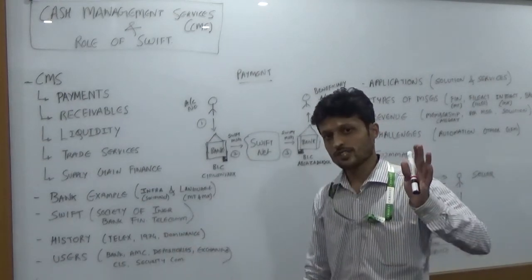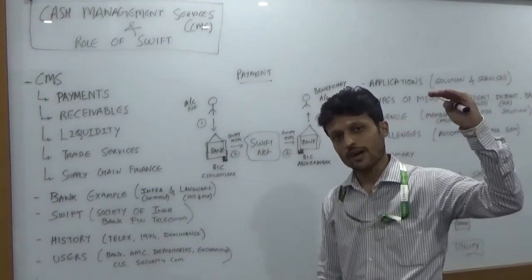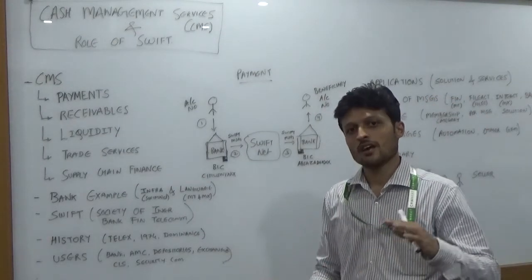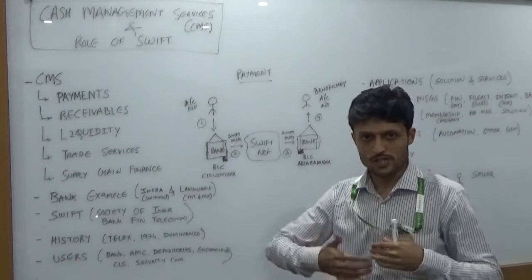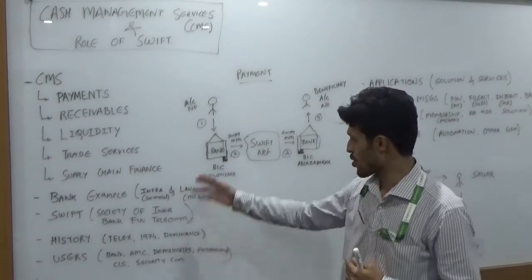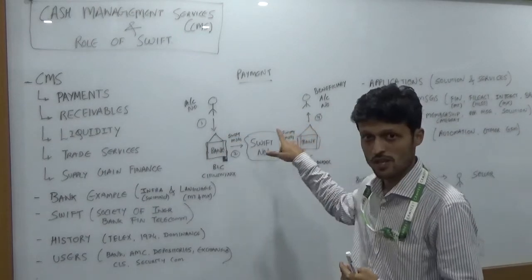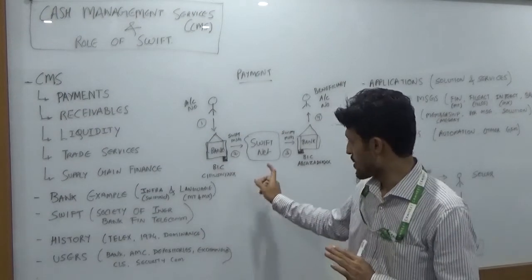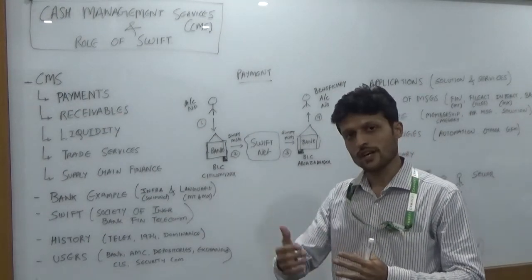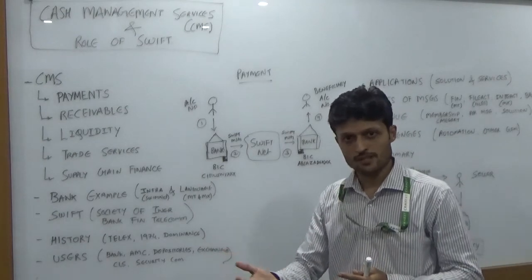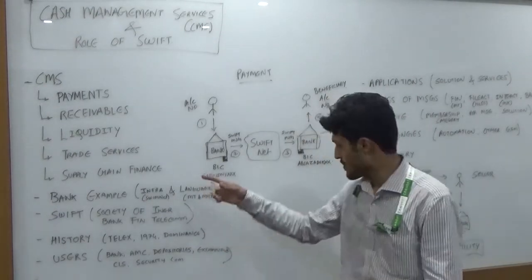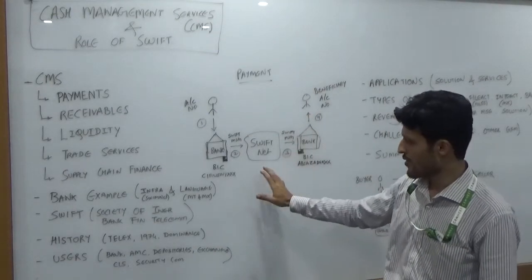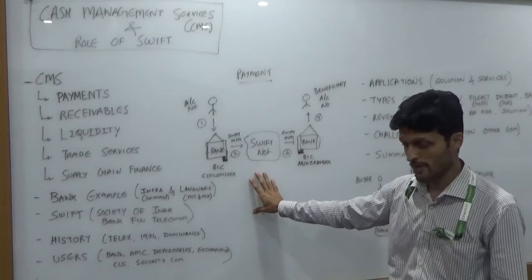Going back a little in history, we used to have telex messages, which had a number of errors, security concerns, and slow processing speed. If you wanted to make a simple transfer to another bank, it could take a couple of days. With SWIFT, it happens in a couple of minutes through straight-through processing, where the message flows seamlessly and the account gets credited immediately. This kind of infrastructure security is provided by the SWIFT network.